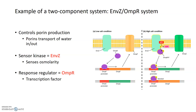One particular two-component system to know for this class is the ENVZ-OMPR system. The overall purpose of this system is to control production of porin proteins in the outer membrane of bacteria in E. coli. Porin proteins allow water transport in and out — they're basically channels that allow transport, and they have different diameters. The ENVZ-OMPR system has a sensor kinase, ENVZ, which is a transmembrane protein that can sense osmolarity or salt concentration outside the cell.